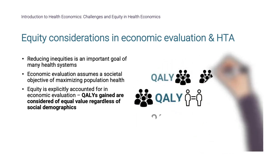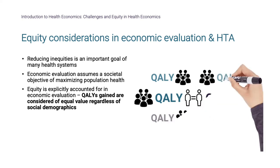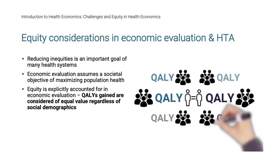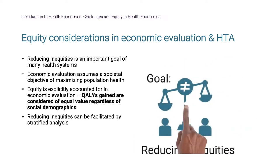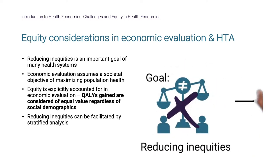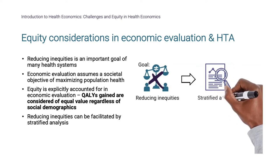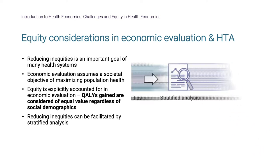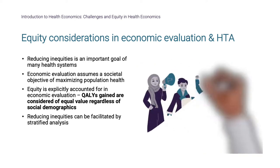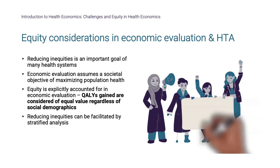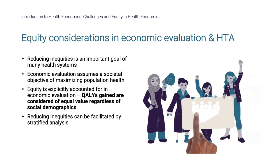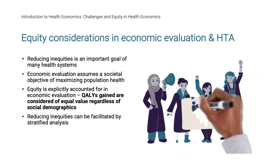QALYs gained are considered of equal value whether they occur in young or old people, marginalized groups, etc. If reducing inequities is an additional goal, this could be facilitated by a stratified analysis. Some groups advocate for different willingness-to-pay thresholds for specific priority groups, such as those for rare or terminal diseases.